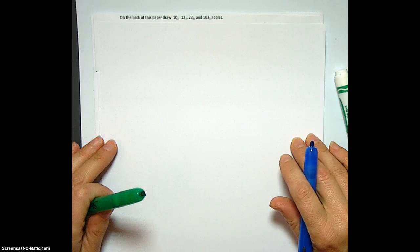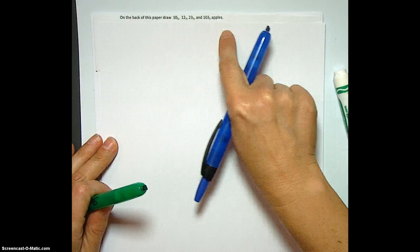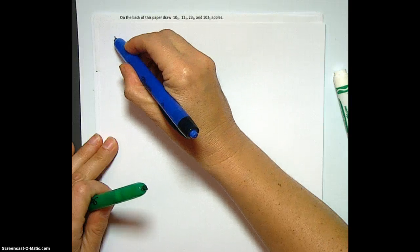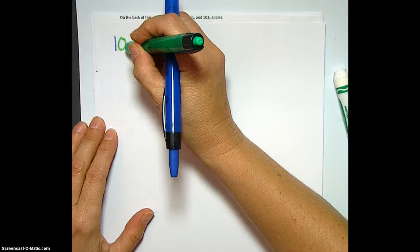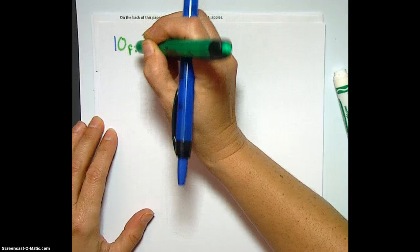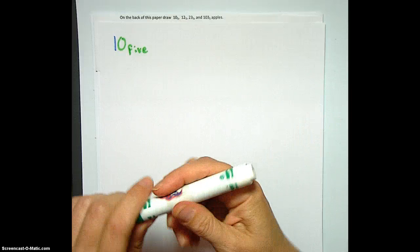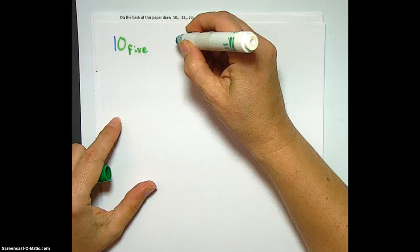Now it's time to draw a pictorial representation of these numbers of apples in base 5. We have first 10 base 5. So let's start drawing some apples. My secret weapon for drawing apples is these Crayola markers, because it's much easier than making squigglies. Let's start counting.